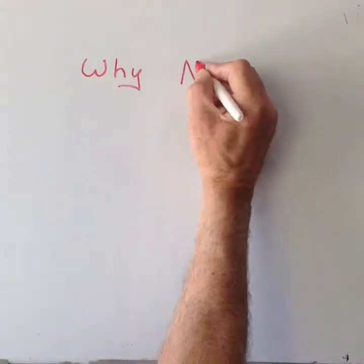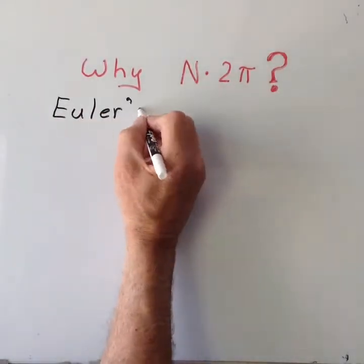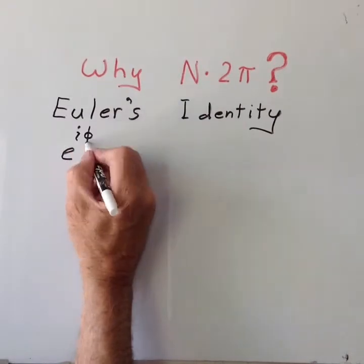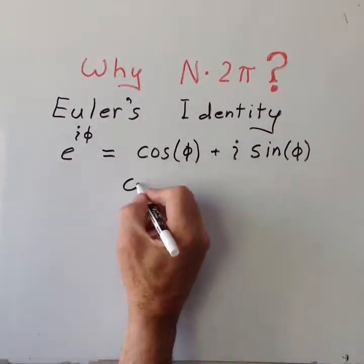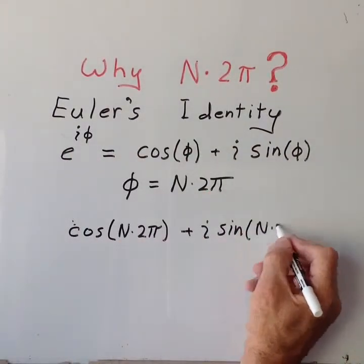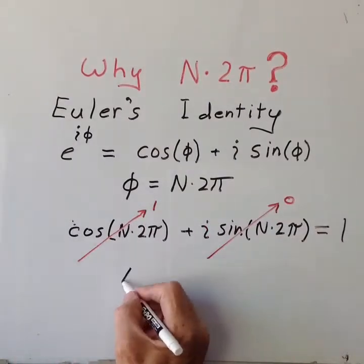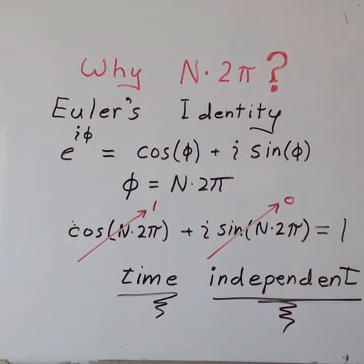You may be wondering what is special about integer multiples of 2 pi. Recall Euler's identity shown here. If you put an integer multiple of 2 pi as the phase factor, the result will always be 1. In other words, time independent.